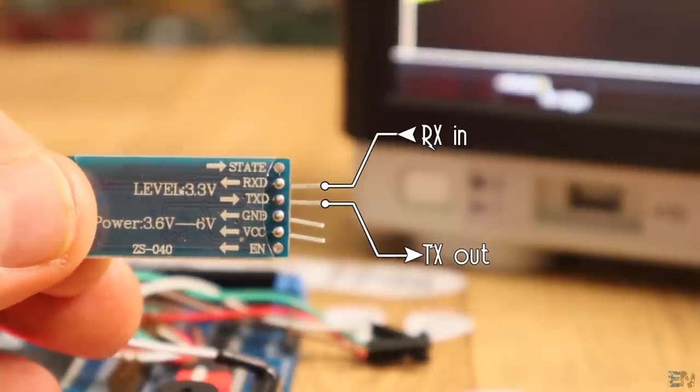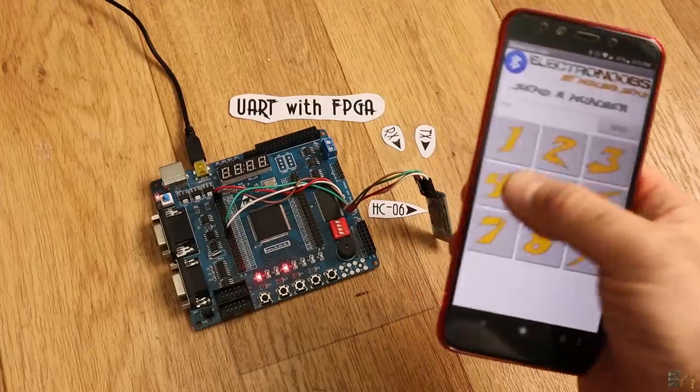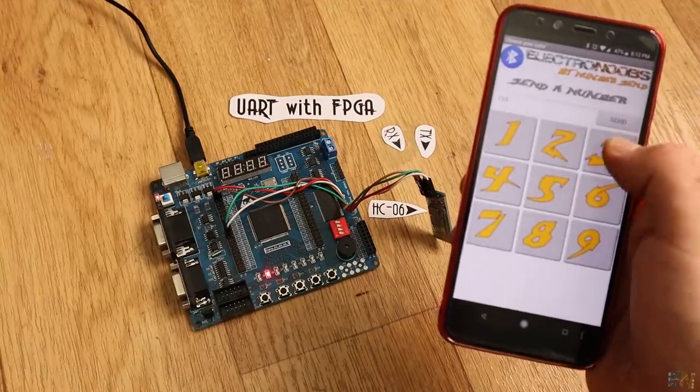For this example I will use this Bluetooth module that has a UART port and send the data from my smartphone. Then we will receive the UART data with our FPGA.